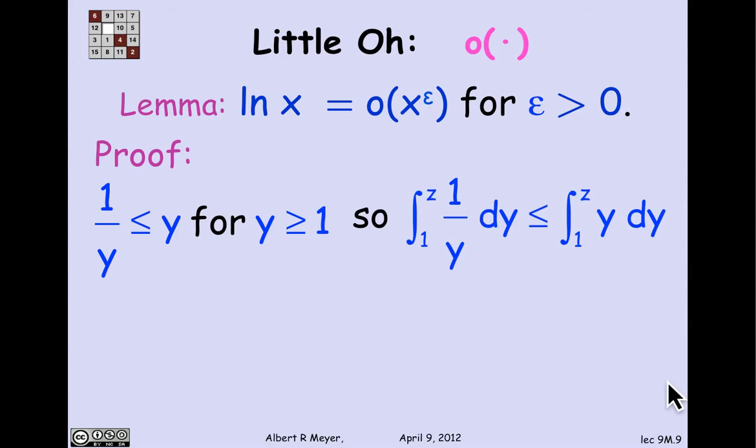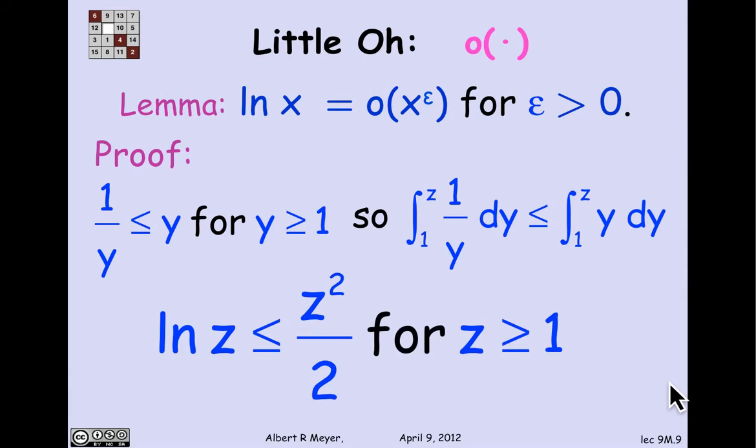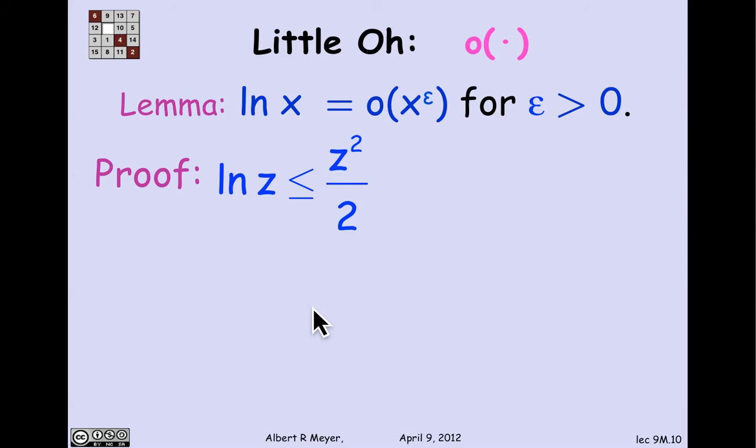That means that I can integrate both sides starting at 1. So if I take the integral of 1 over y from 1 to z, it's going to be less than or equal to the integral of y from 1 to z. Well, integral of 1 over y is log z. And the integral of y to z is z squared over 2. So what we get is this new inequality. The log of z is less than or equal to z squared over 2 for z greater or equal to 1. So we're on the way there. We've got log of z is less than z squared, but not z to any epsilon power. But we'll get that just by making a smart substitution for z. So that's the next step. We have that log of z is less than or equal to z squared over 2 for any z greater or equal to 1. And then, let's let z be the square root of x to the delta, where delta is simply some positive number.